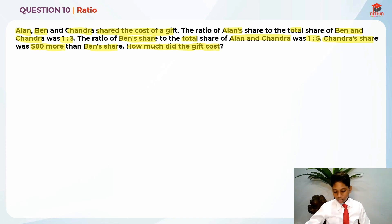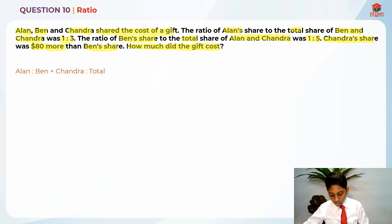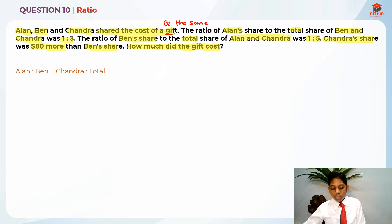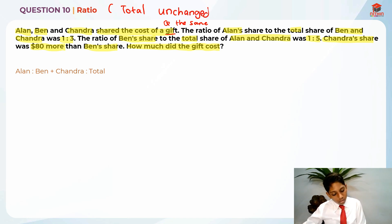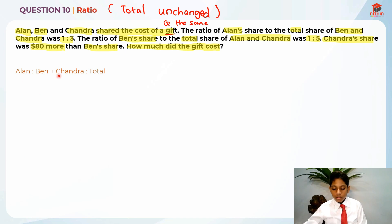Let's write down the ratios first. Alan is to Ben plus Chandra is to total. You know why I put the total here? Because the total is unchanged — the gift's price will always be the same. So they're also testing us on total unchanged. Alan is to Ben plus Chandra is to total is actually 1 is to 3 is to 4, because the total is 4.